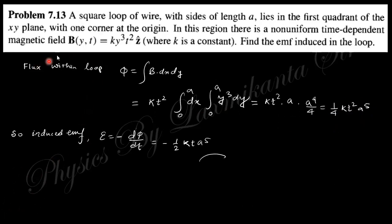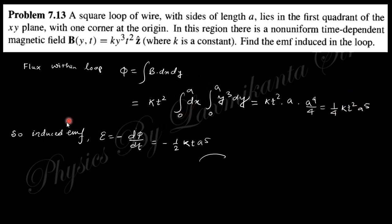Next: a square loop of side A lies in the first quadrant of the xy plane in a non-uniform magnetic field. Find the induced EMF. The flux is Φ = ∫B·dS where dS = dx·dy. Integrating x from 0 to A and y from 0 to A with a y³ dependence gives the total flux. The induced EMF is ε = −dΦ/dt, and taking the time derivative gives the answer.